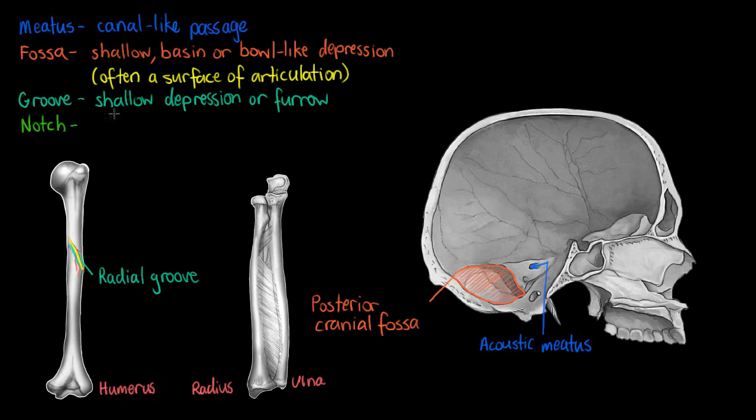The next structure is called a notch. A notch is a structure similar to a fossa but located on the edge of a structure. If we look down here on the proximal end of the ulna, we can see the trochlear notch. I'm just shading it in here. Once again, this type of bone marking, as with many of our depressions, is a site of articulation.